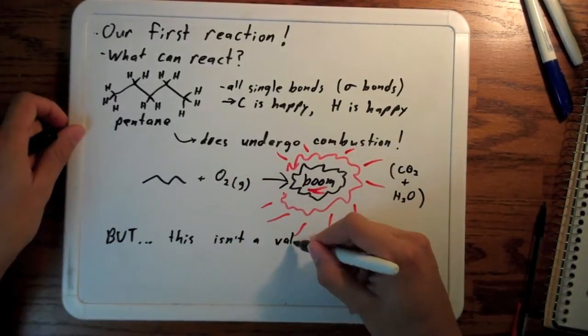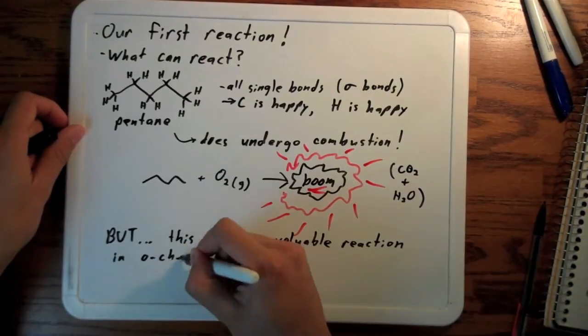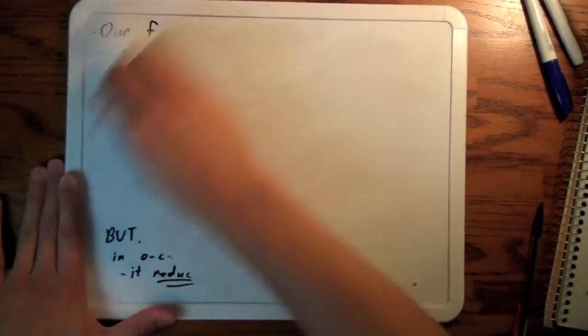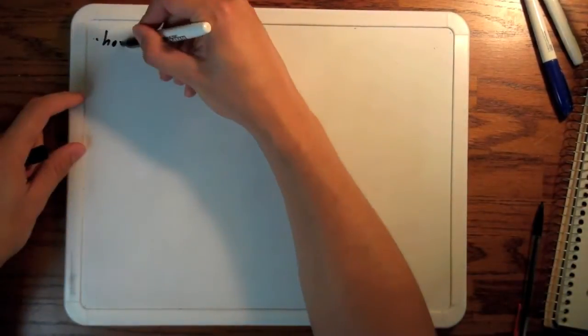But that's not such a valuable reaction for organic chemistry. It reduces the complexity of the molecules that you have to work with. Think about it this way. Nature had to do a lot of work to make that pentane, and now all you have is CO2 and water.